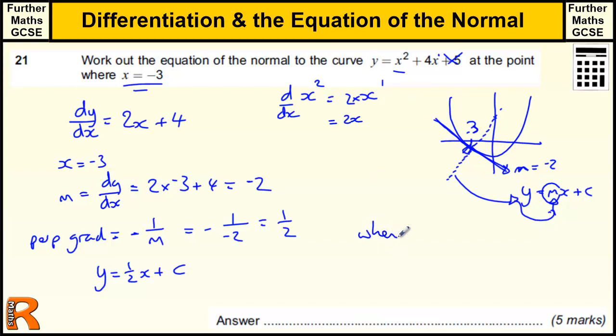So when x equals minus 3, on the original graph, y equals minus 3 squared plus 4 times minus 3 plus 5. We still use the 5 when we're trying to work out the y coordinate. So we get 9 plus minus 12 plus 5, and 9 plus 5 is 14, take away 12 is 2.